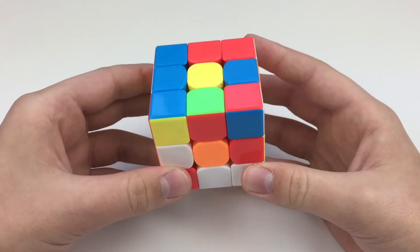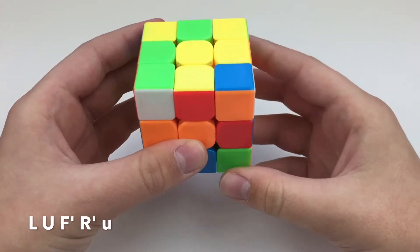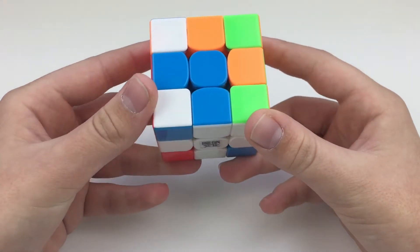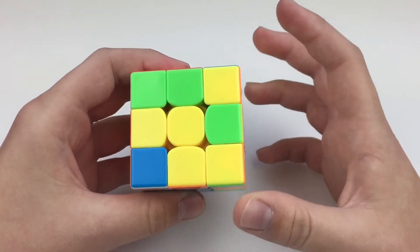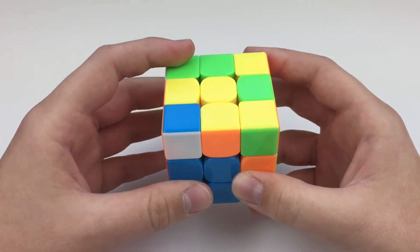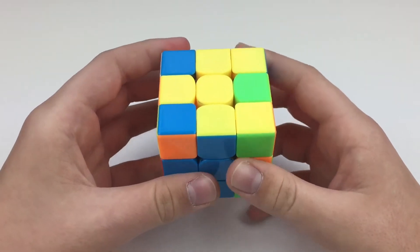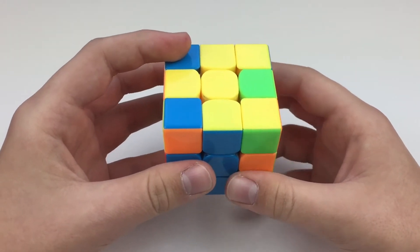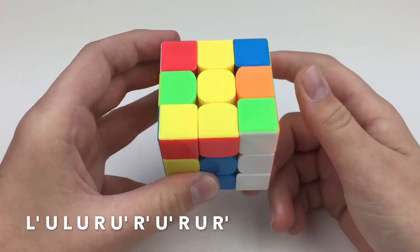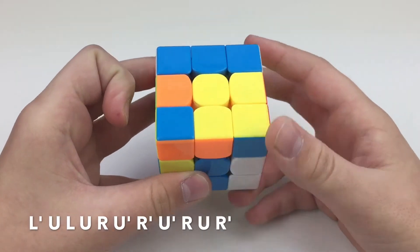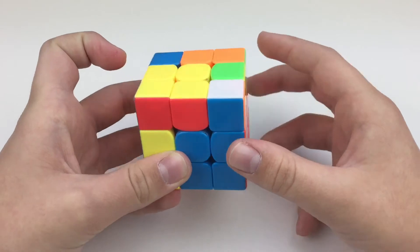So for the cross, and the cross is done. The first F2L pair is back here, and it was pretty simple. Next, there are still no rotations, it's like that, and then this pair is solved.